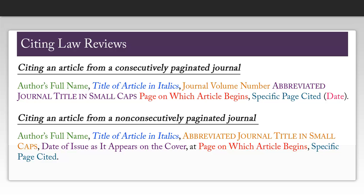A consecutively paginated journal would be one where the first issue published in a year would start on page 1 and go through, let's say, page 300. Then the second issue published that year would start on page 301. For a non-consecutively paginated journal, each new issue will start on page 1.